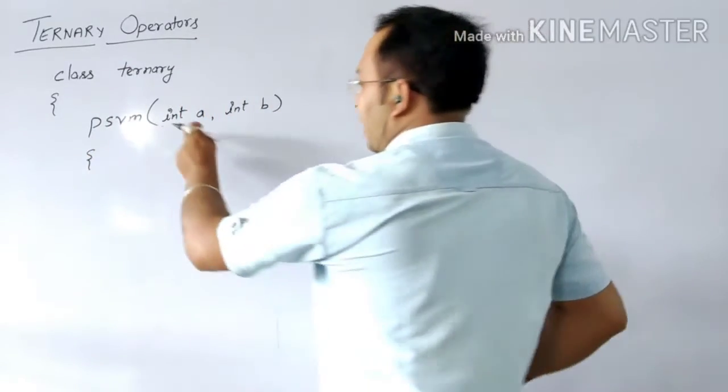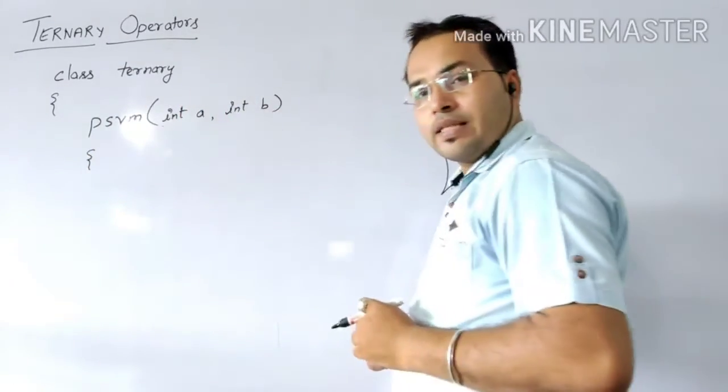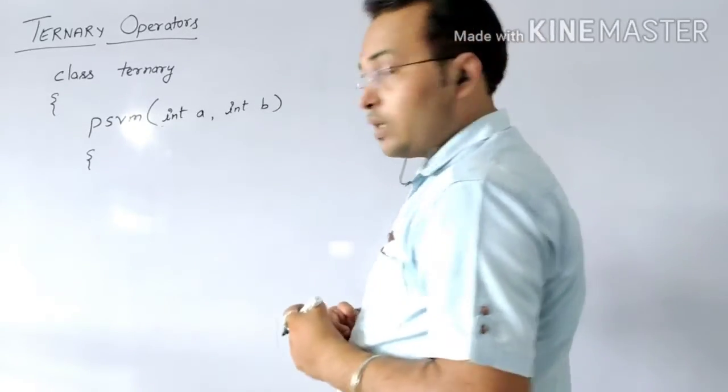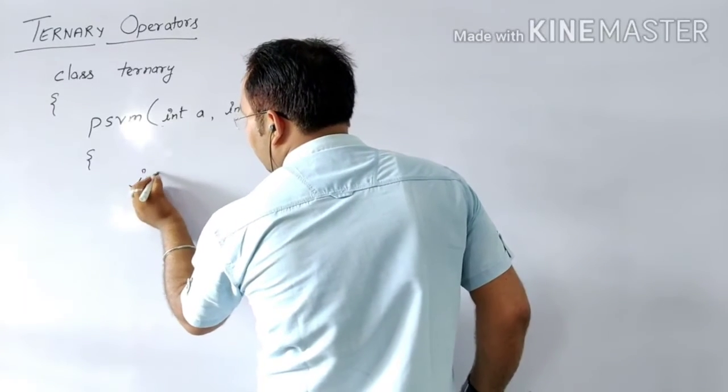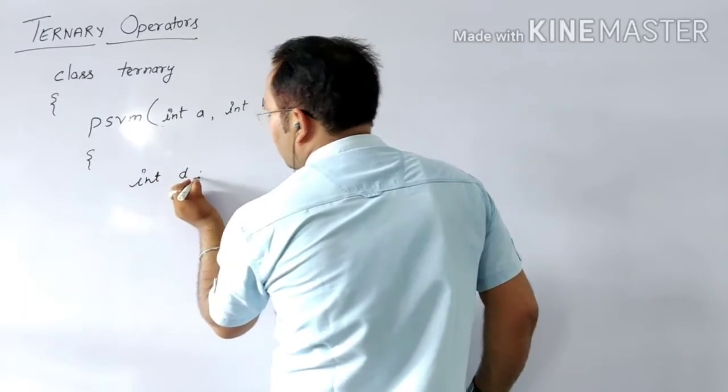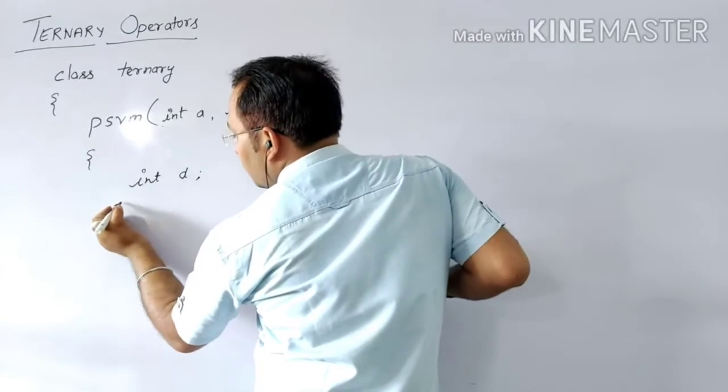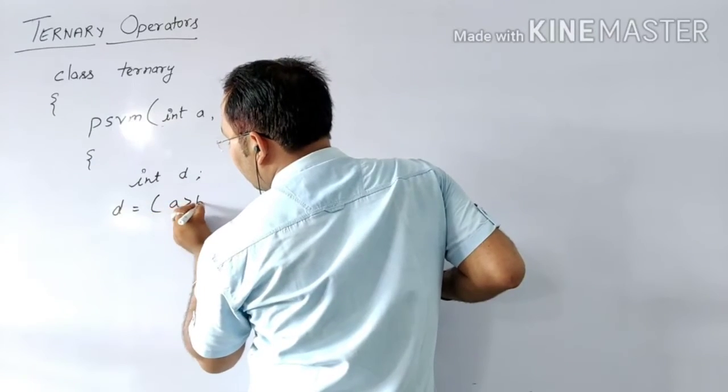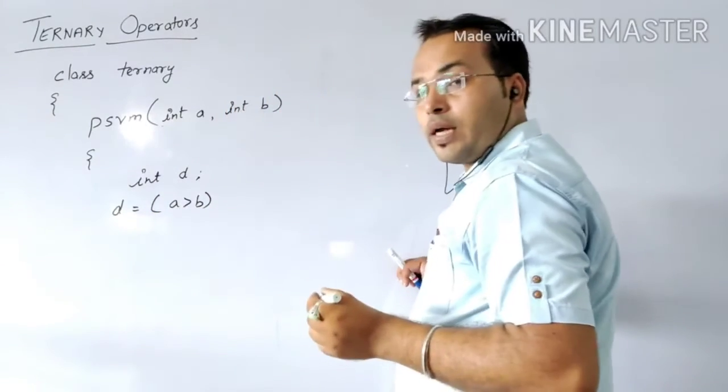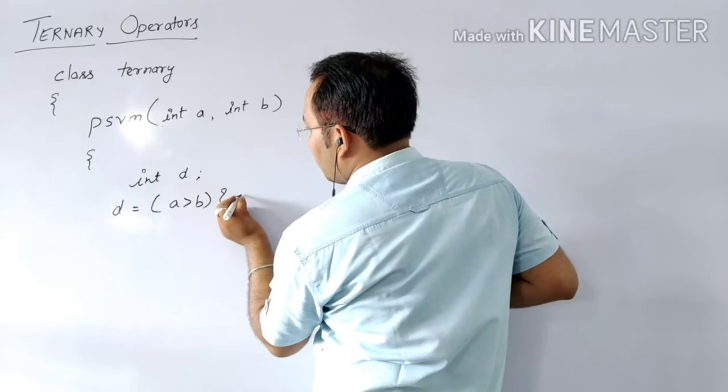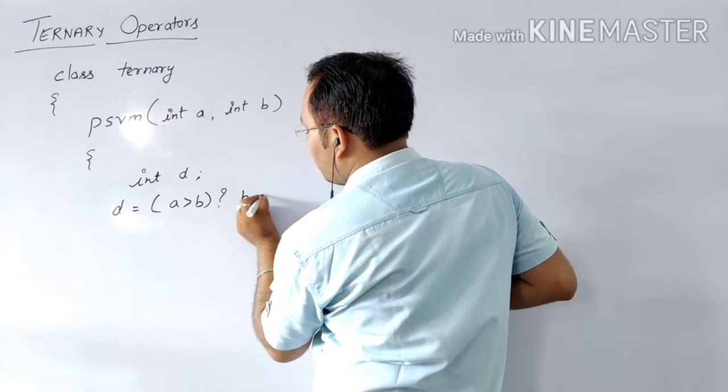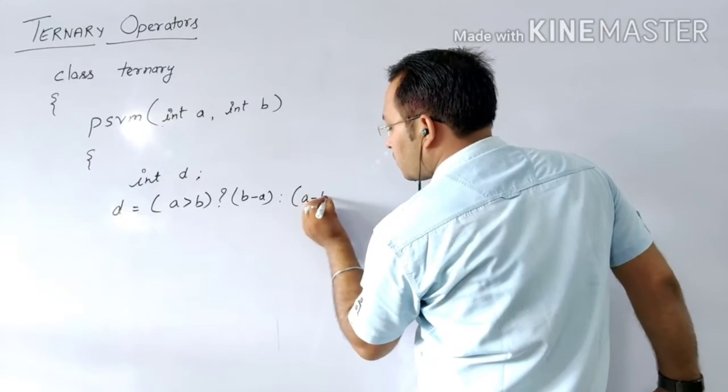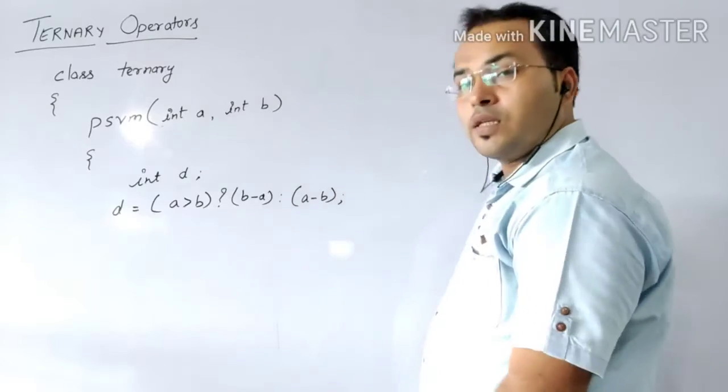Next. Now the next thing is what? We are having a and b as the value. Then after that, we have to store it in d. So take int d. Now, after that, d equals to, what was my condition? a greater than b. Question mark, b minus a, colon, a minus b. This will be my situation.